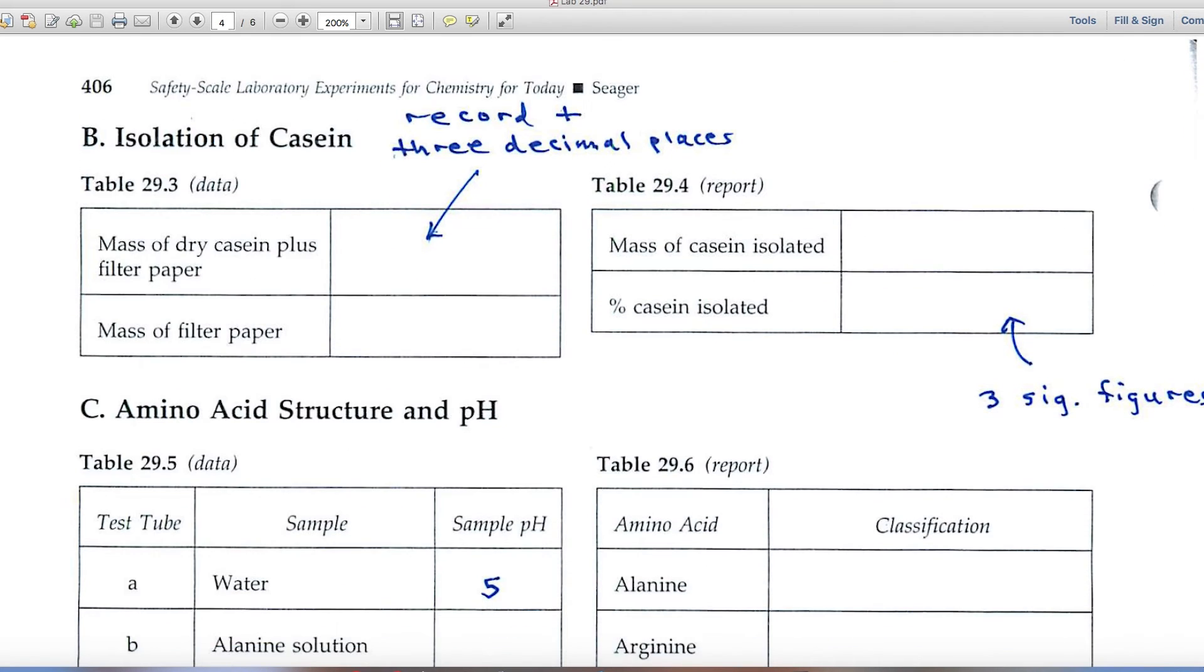Part B deals with the isolation of casein. Casein is a protein that's present in milk. It's separated from milk and goes through a various workup where you isolate the casein. And when you record weights, remember that you can record to three decimal places.